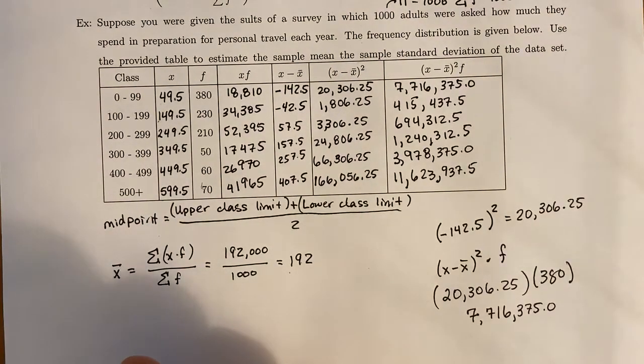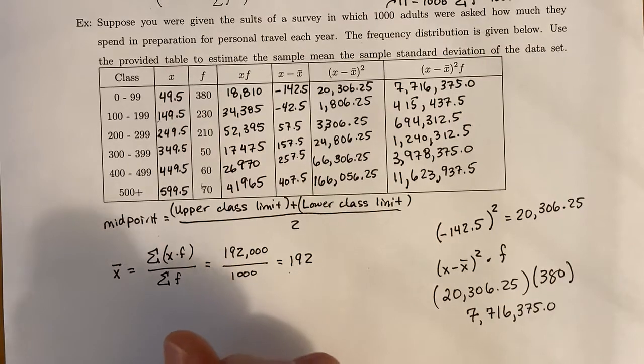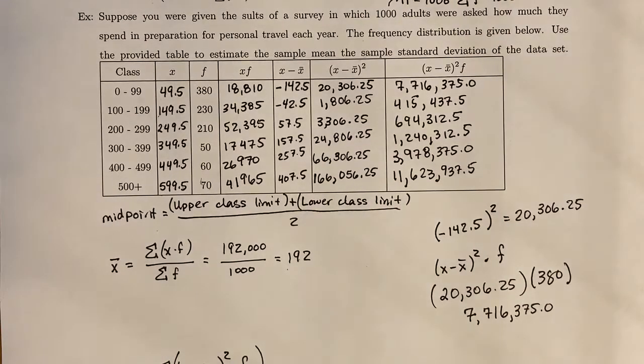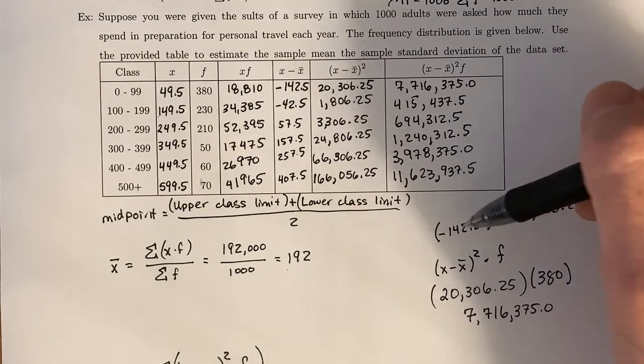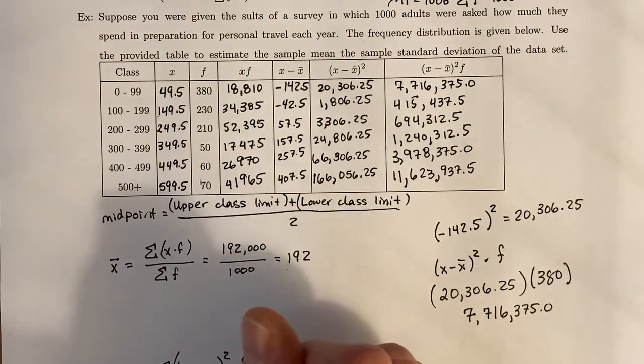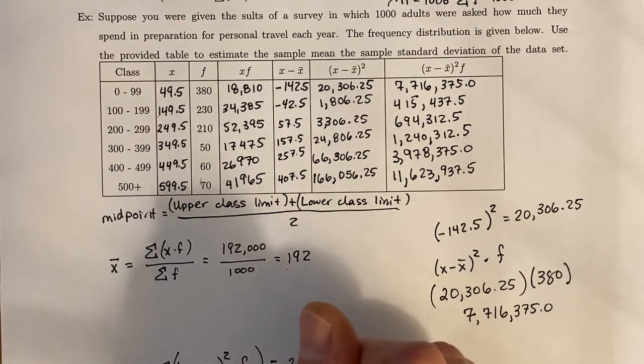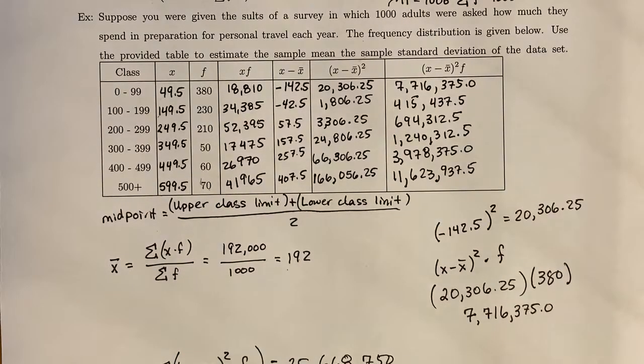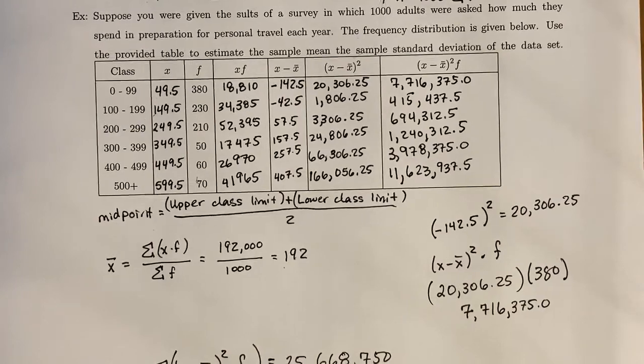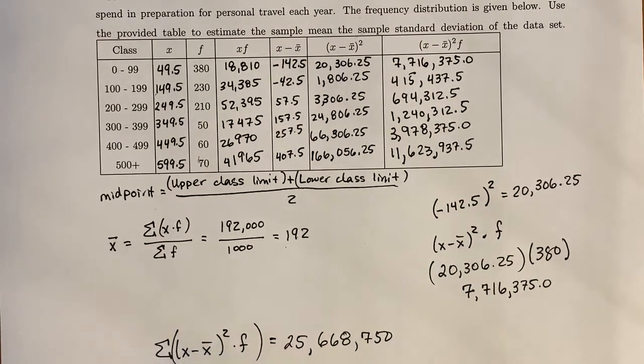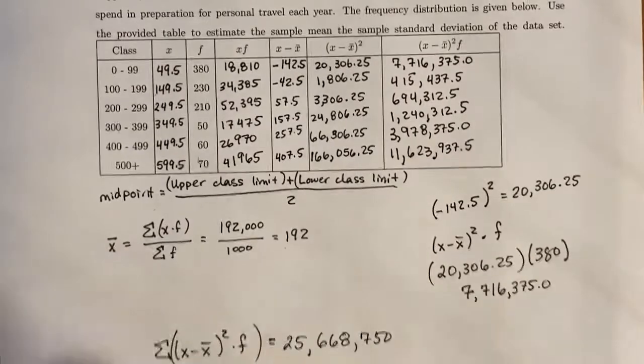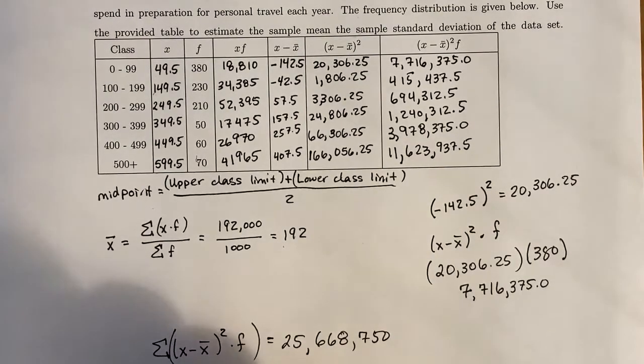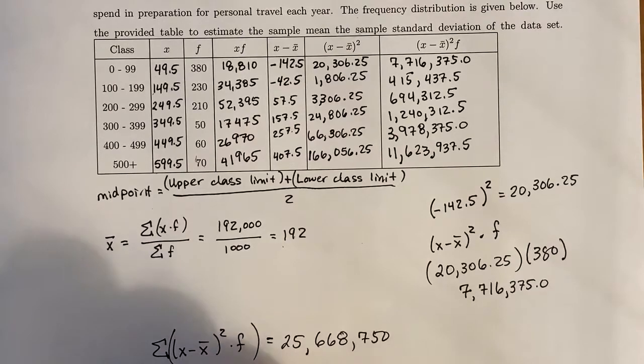Once we have this whole column filled out, we're going to take the sum of X minus X-bar squared times F. This symbol really means you take these six numbers and add them up. Once you do that, you get 25,668,750. We're almost there. We have the sum of the squares times the frequency over here. We have the whole chart filled out. We know what the sum of the frequencies is, which was 1,000.